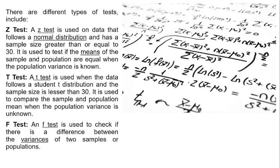The T test is used when the data follows a student T distribution and the sample size is less than 30. It is used to compare sample and population mean when the population variance is unknown.